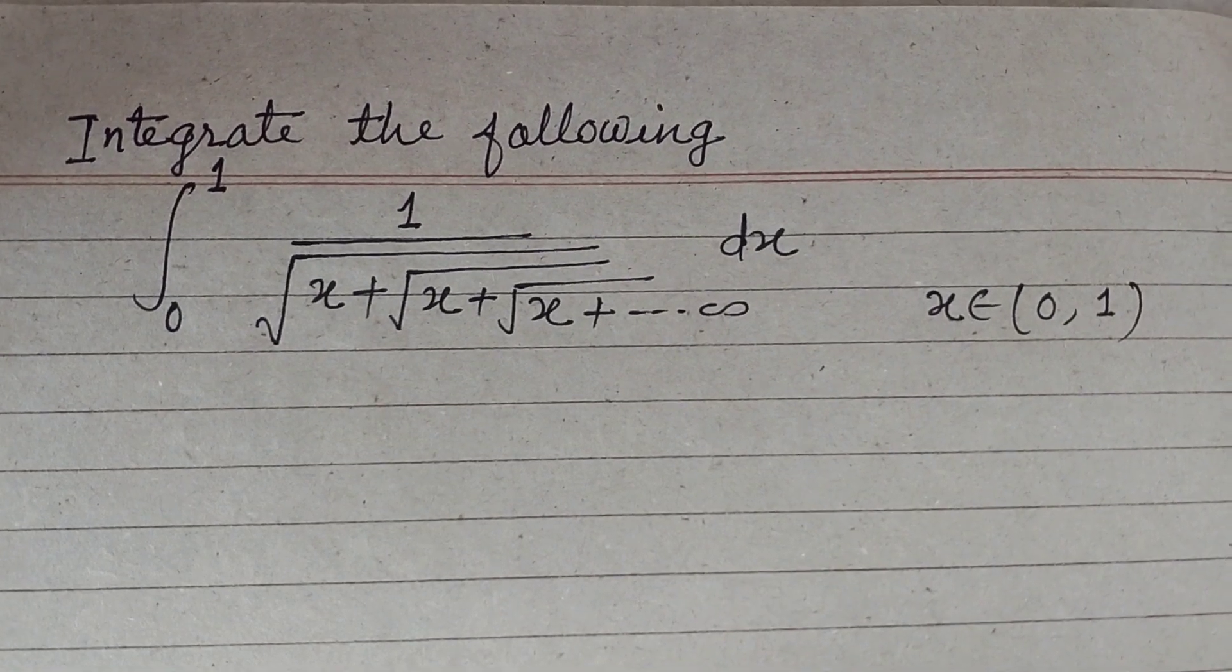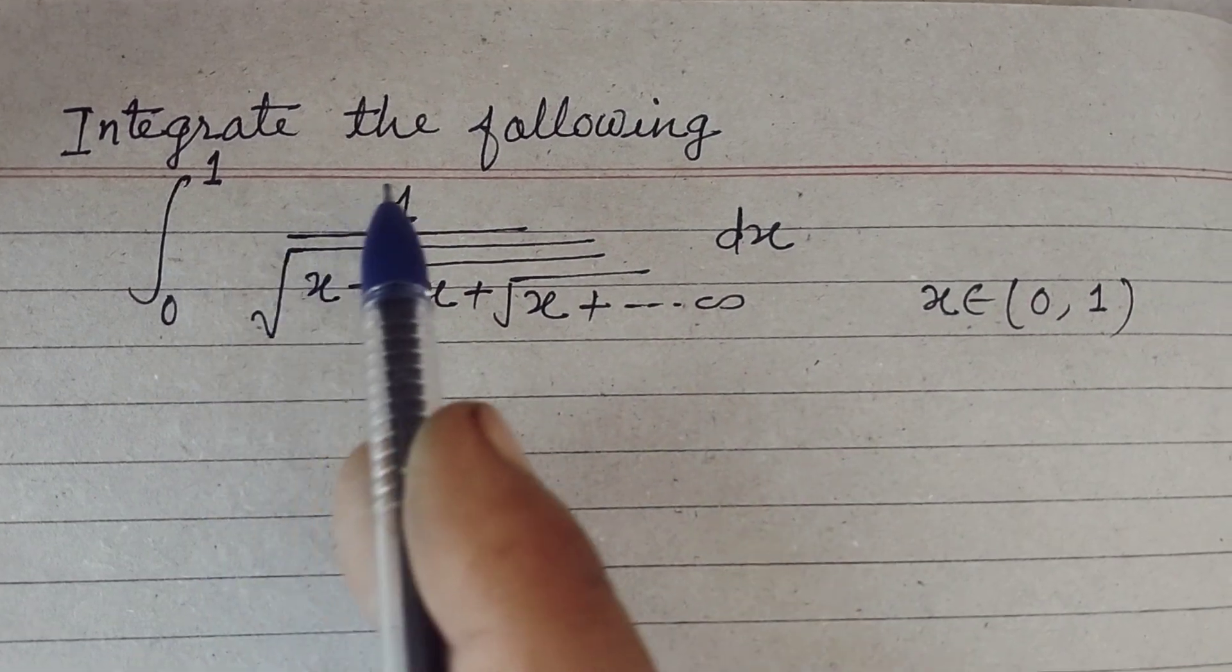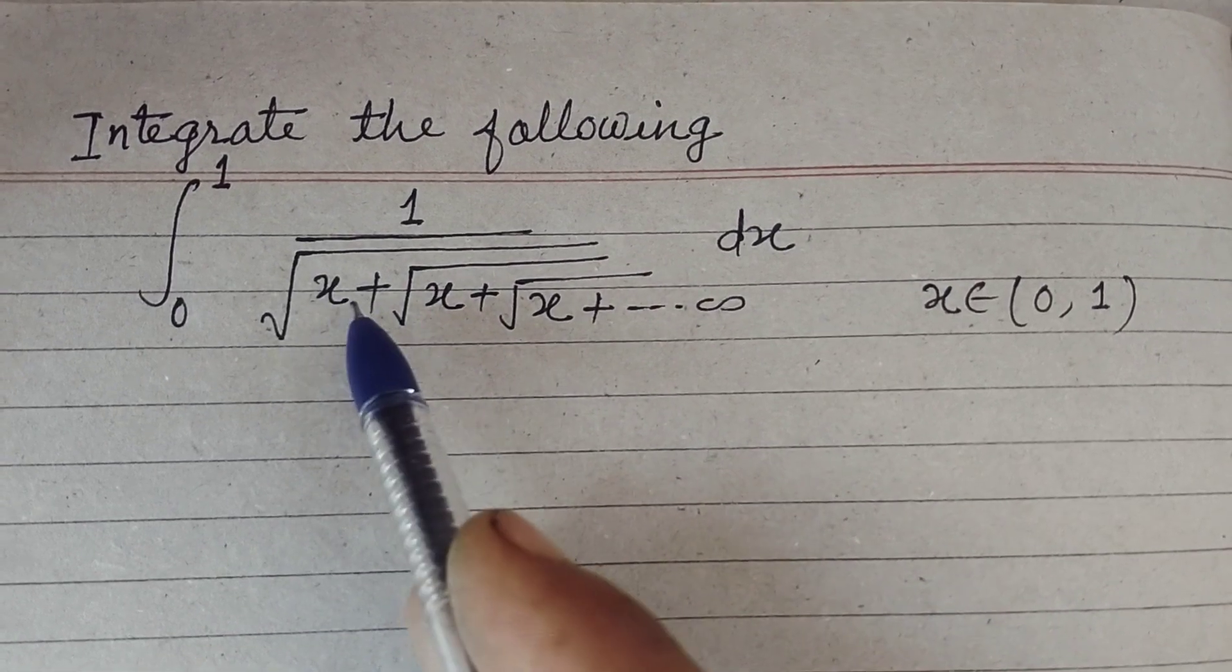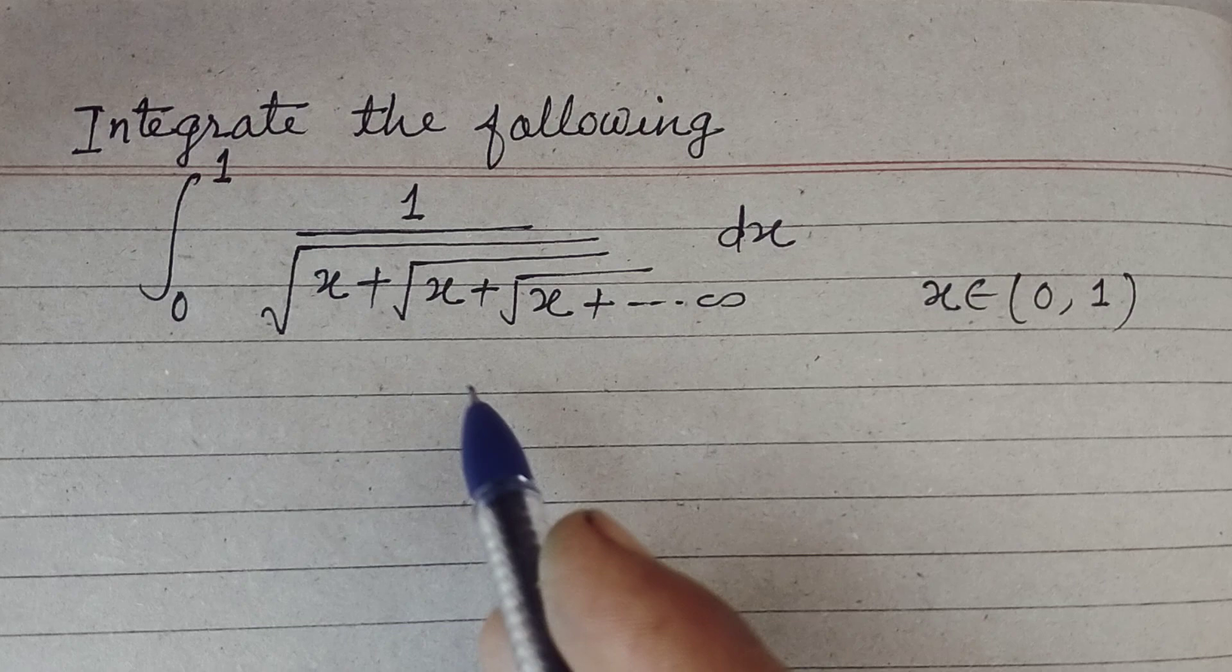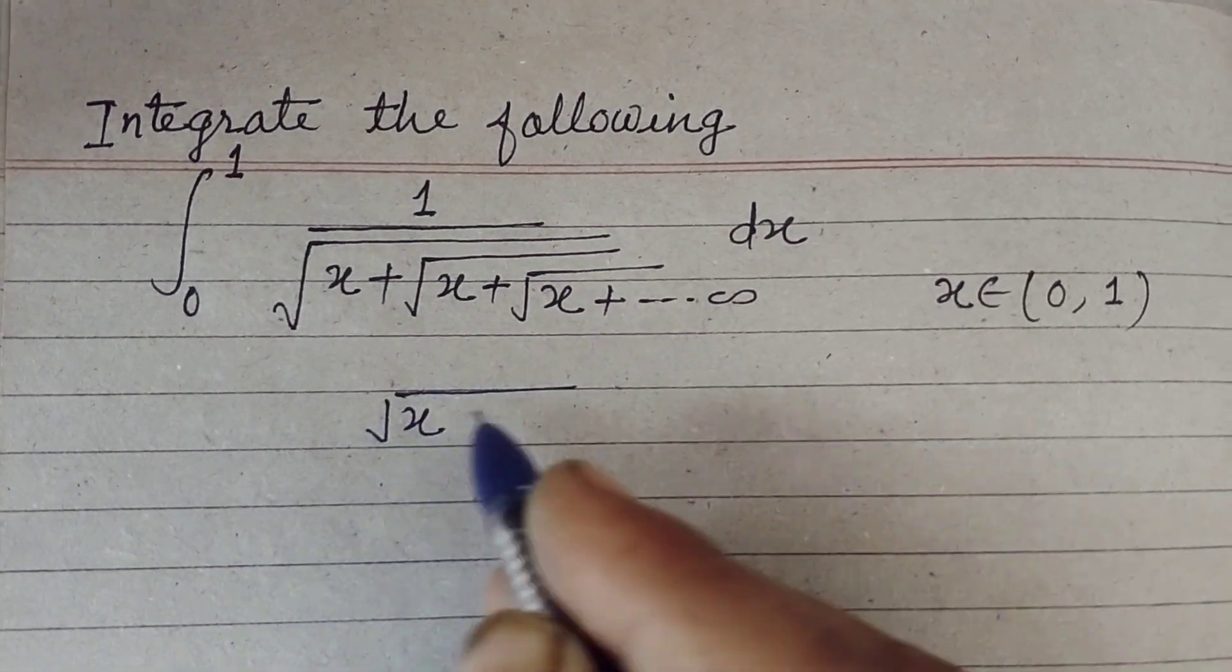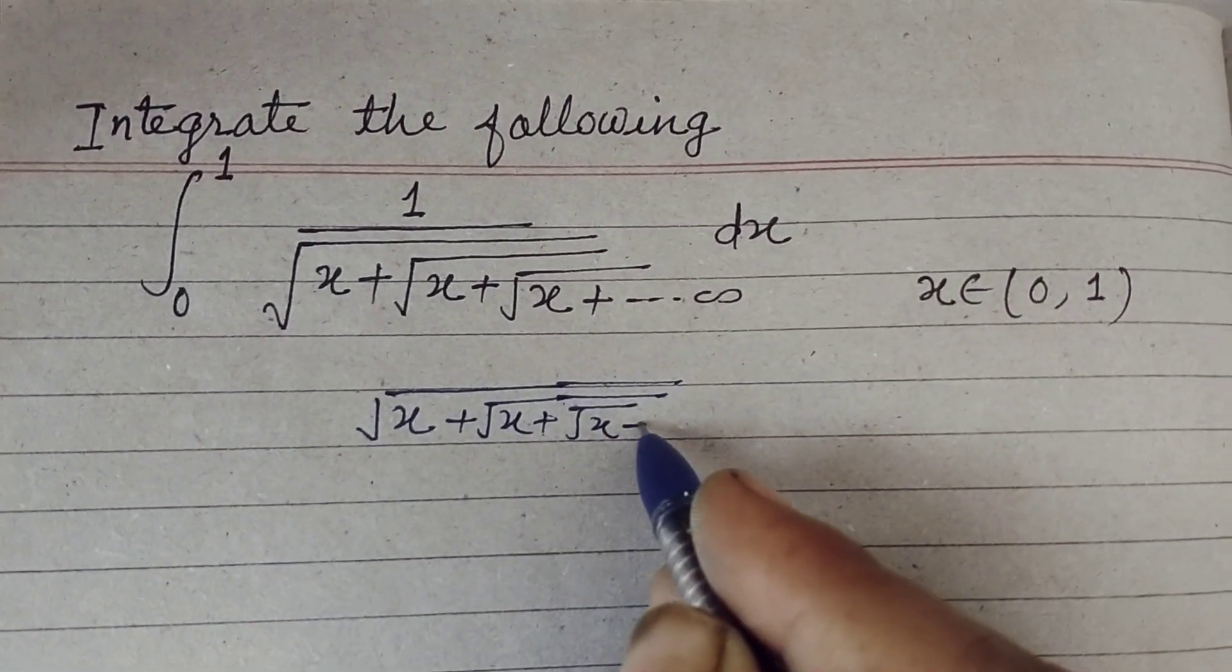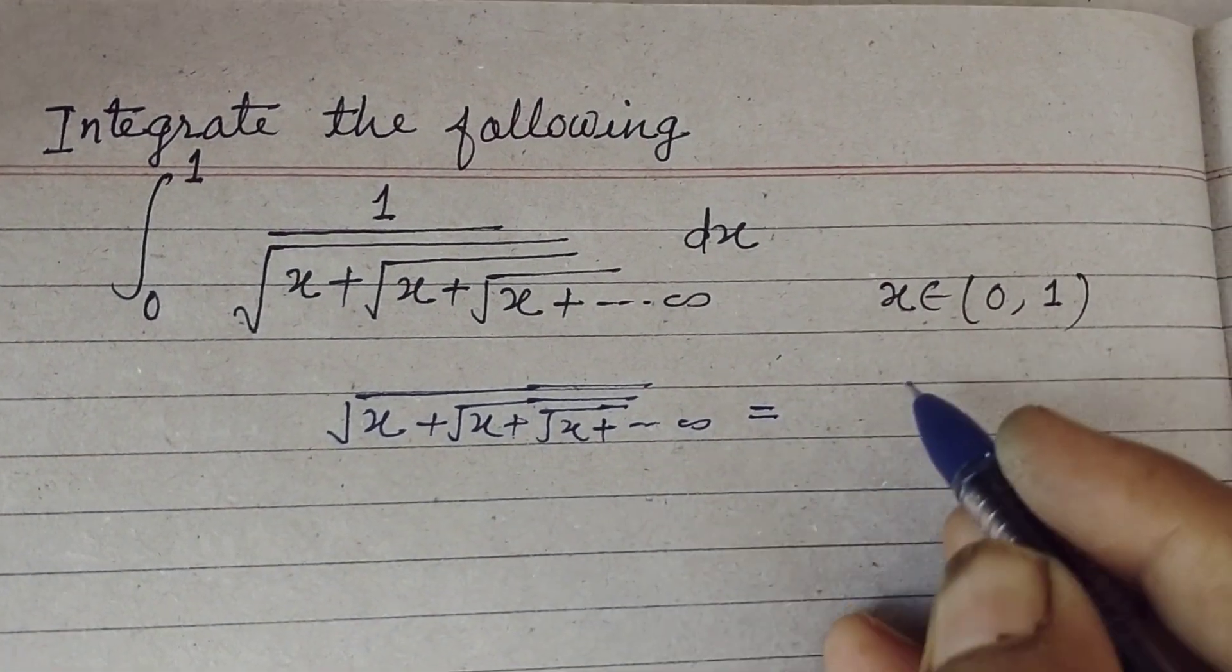Hello students, warm welcome to this YouTube channel. Question from integration: integrate the following, limit zero to one, one upon root of x plus root of x plus root of x up to infinite. So first we take this infinite series as root of x plus root of x plus root of x and so on up to infinite.